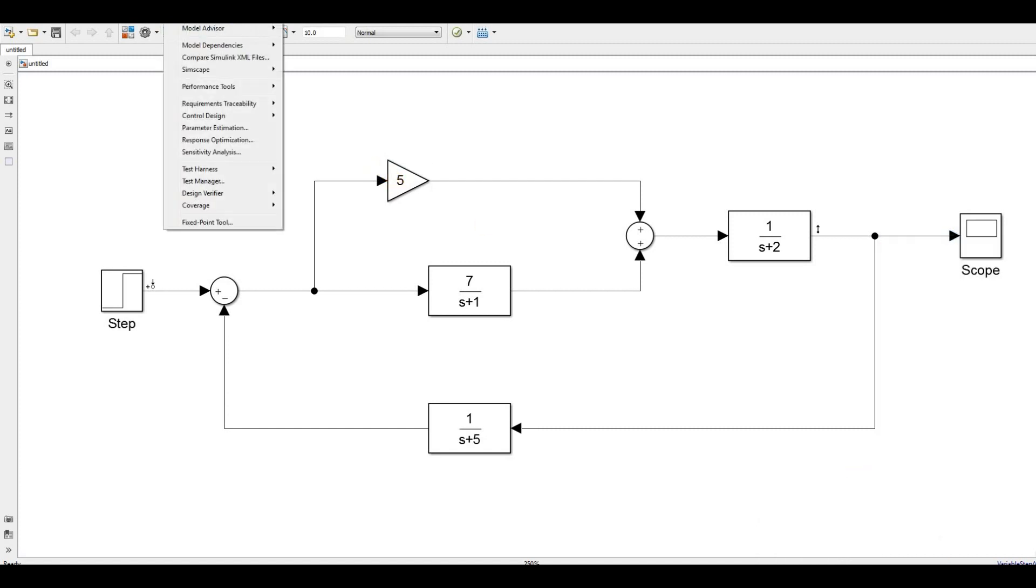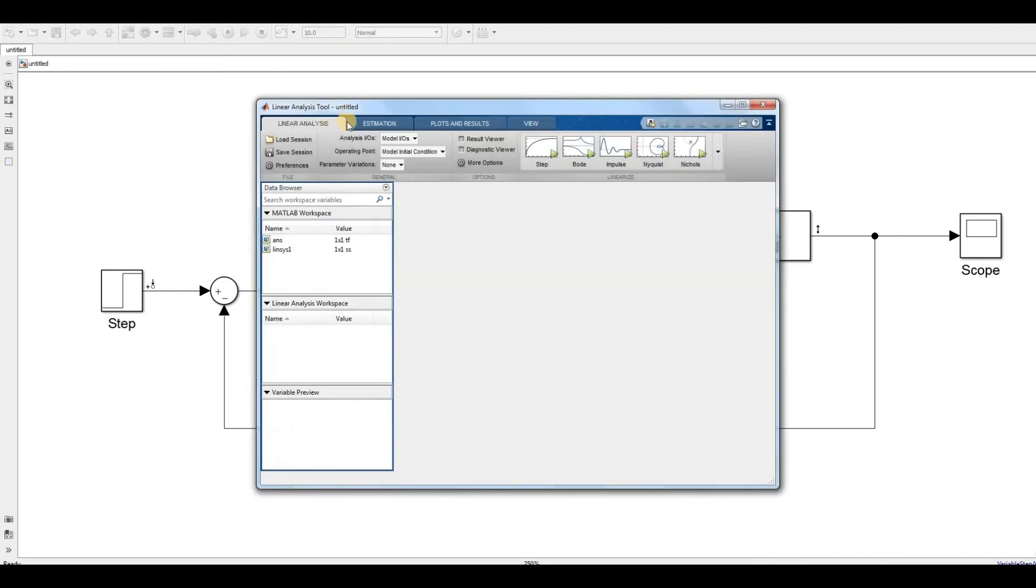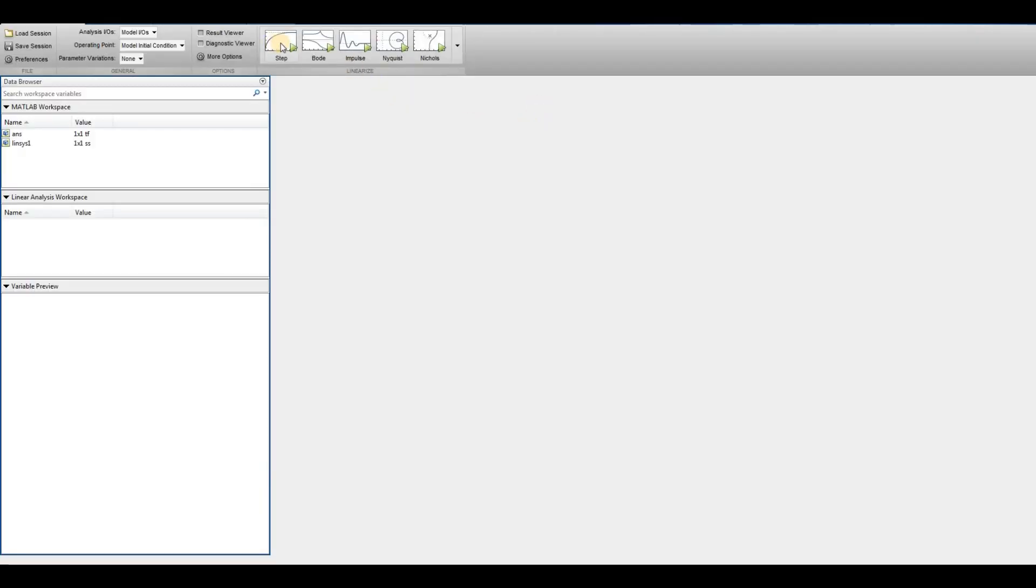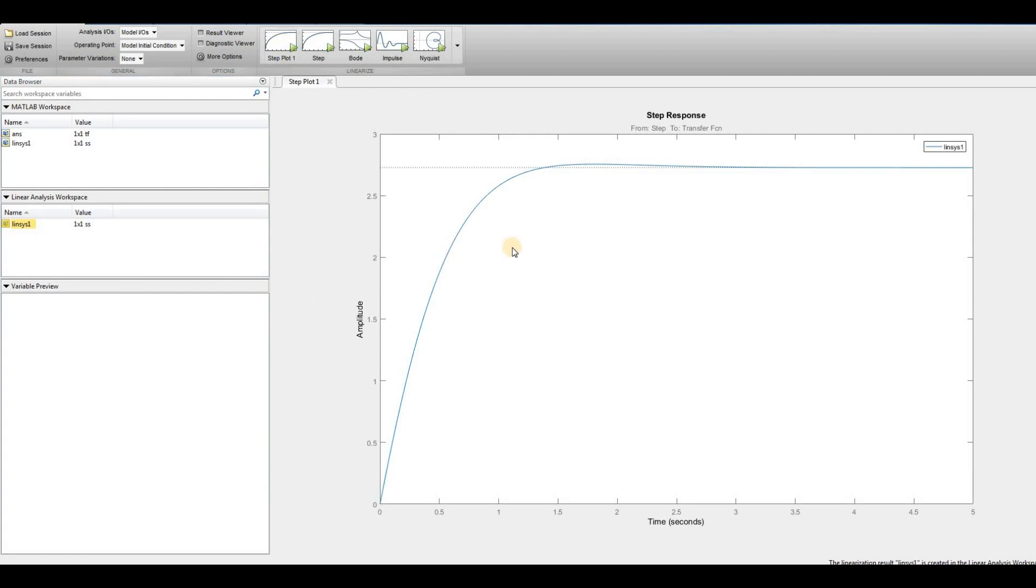Then go to Analysis, select Control Design, select Linear Analysis, and run this. You will get the step response of the system.